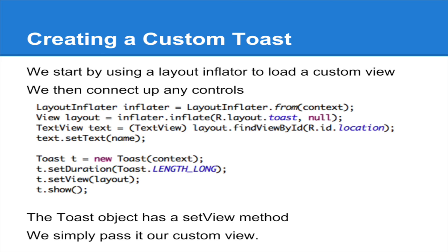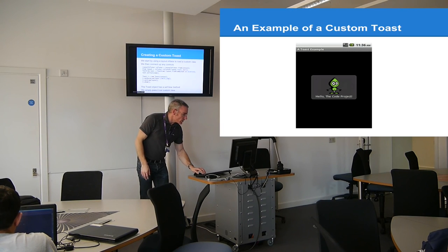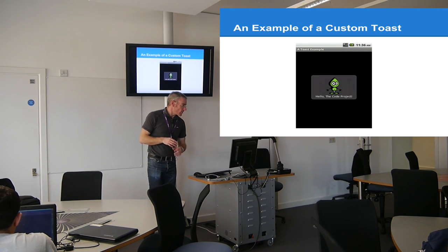Once you have your layout, you create the Toast object — you can chain the method calls or break them into separate lines. The critical method is t.setView(), which lets you specify the custom layout as the toast's view. You can create a beautiful custom toast with whatever you want inside it, inflate it, connect things to it, and change values. You could even have buttons on it, though that would be pointless since it disappears after about five seconds.